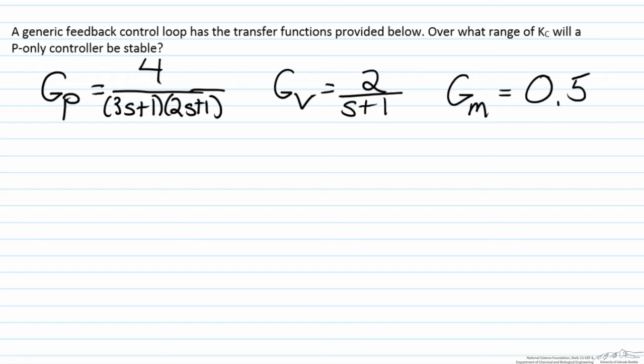Our process is clearly stable right now. The values of tau are three and two respectively, both positive, and the roots are negative one-third and negative one-half respectively, indicating that we have a perfectly stable function.